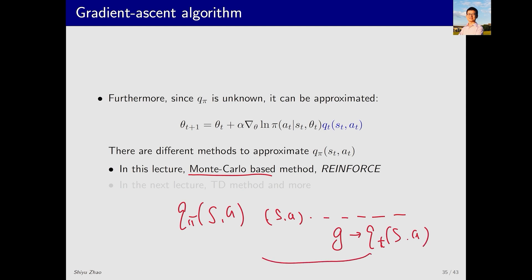This return G can be used as an estimate of Q_pi(s, a). Combining this Monte Carlo method with the policy gradient algorithm, we get an algorithm called REINFORCE, which I will explain in more detail shortly.